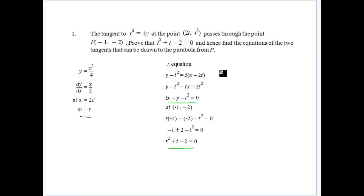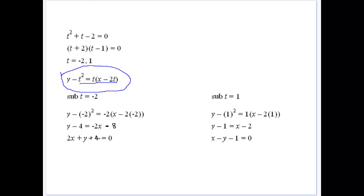So we've got the tangent, we've got a point, and we've got the t. So there's always going to be 2 tangents that can be drawn from any point that's outside the parabola.